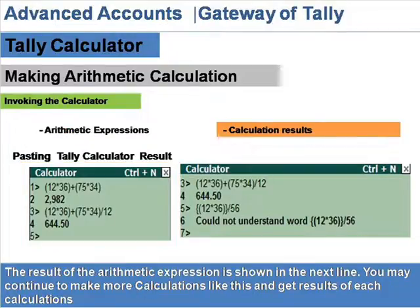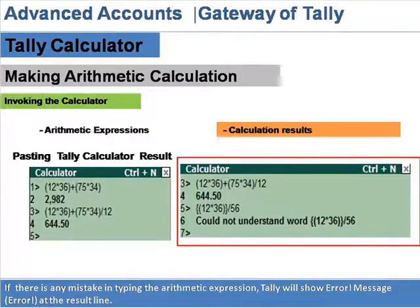Calculation Results. The result of the arithmetic expression is shown in the next line. You may continue to make more calculations and get results of each calculation. If there is any mistake in typing the arithmetic expression, Tally will show an error at the result line.